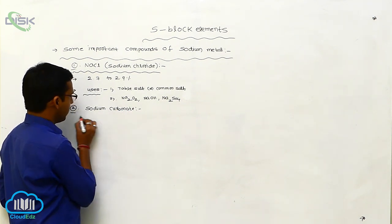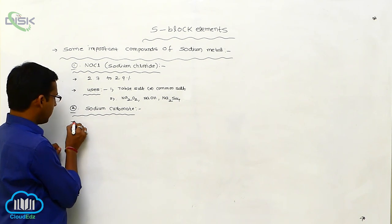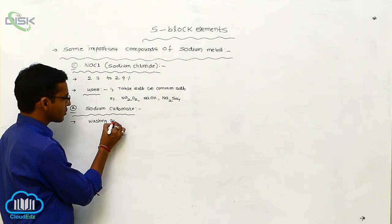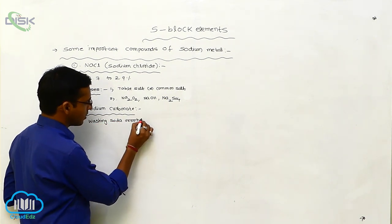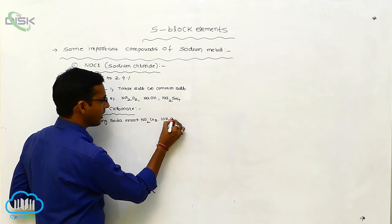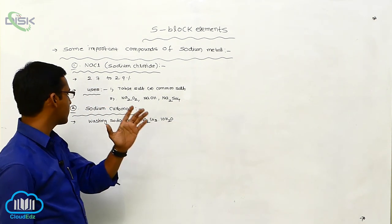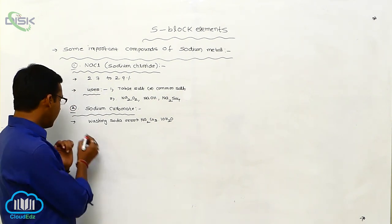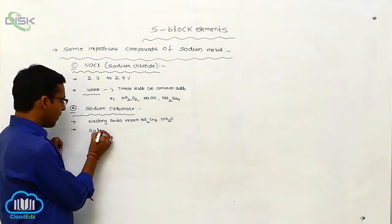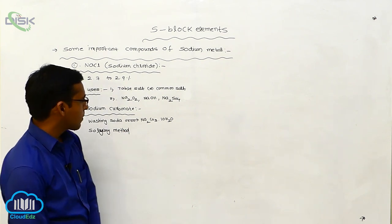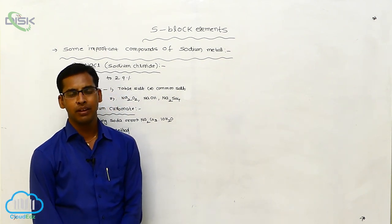Next is sodium carbonate. Sodium carbonate is generally used as washing soda. The formula of washing soda is Na₂CO₃·10H₂O — decahydrated sodium carbonate — which is called washing soda. This sodium carbonate is prepared via the Solvay method or Solvay process.